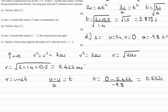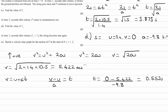We want the total time after release, so we add stage 1's time to stage 2's time. T2 is equal to 3.873 + 0.553, and that gives 4.43 seconds.